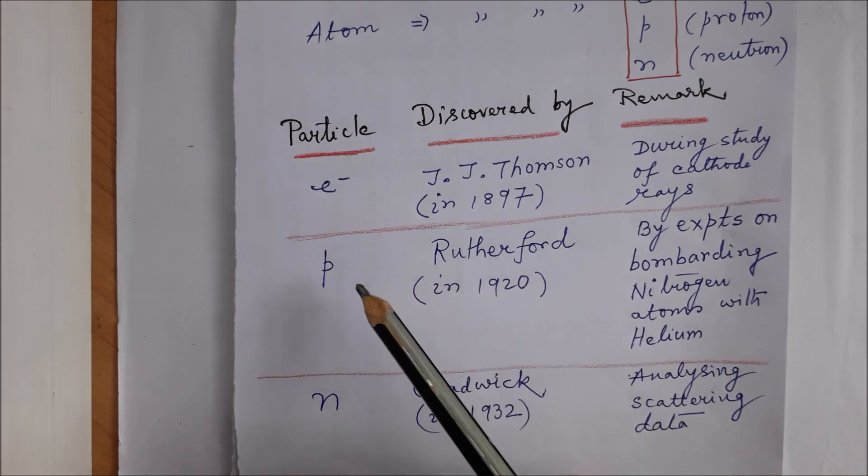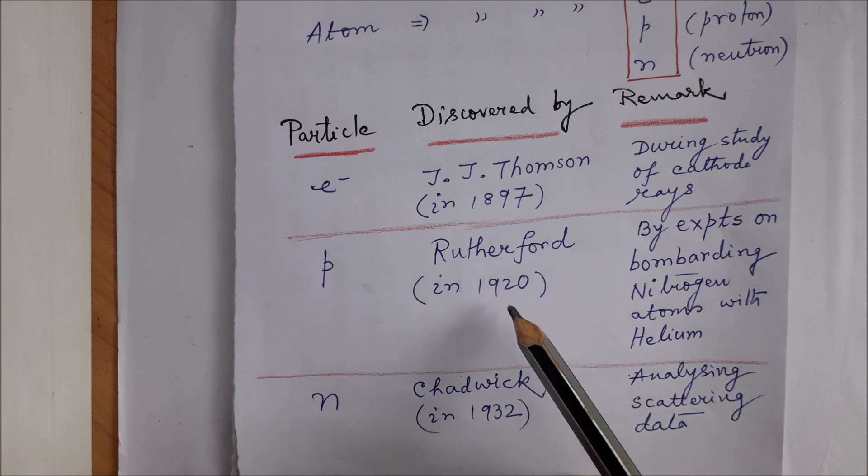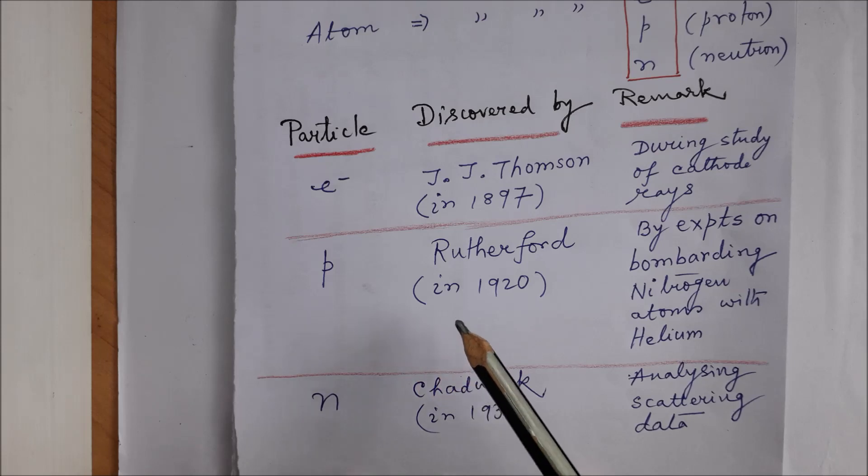The proton which exists in a nucleus was discovered by Rutherford in 1920 through his experiments on bombarding nitrogen atoms with helium. Discovery of proton is credited to Rutherford though Goldstein had works on it. Chadwick in 1932 discovered neutron through his analysis of data relating to scattering problem.